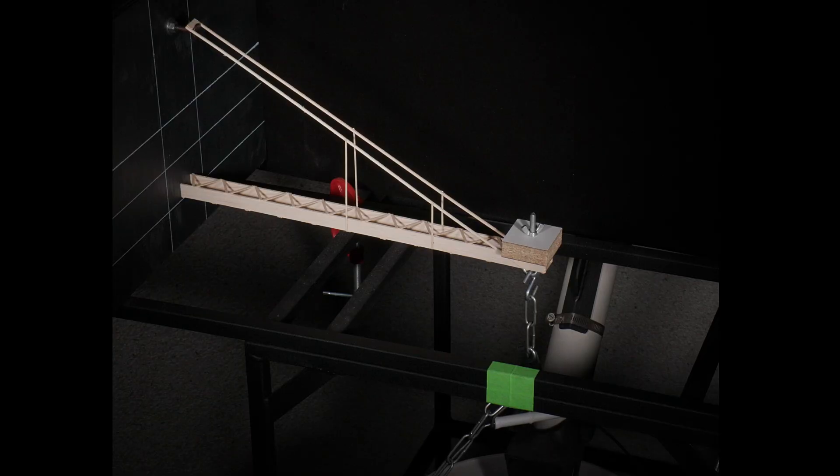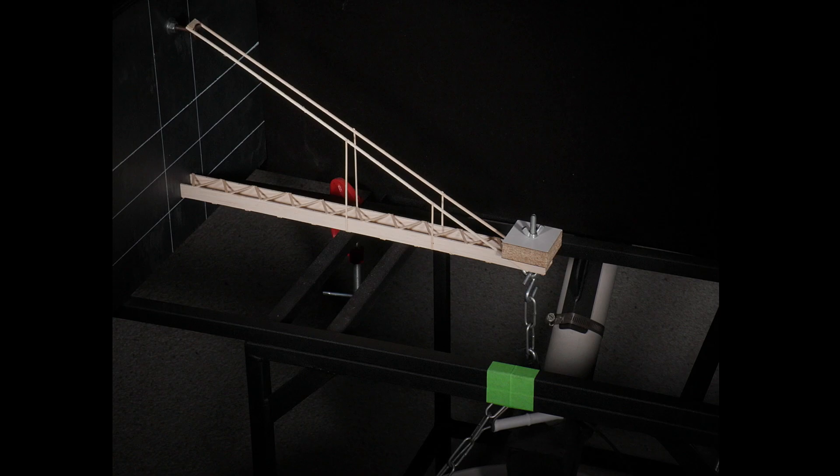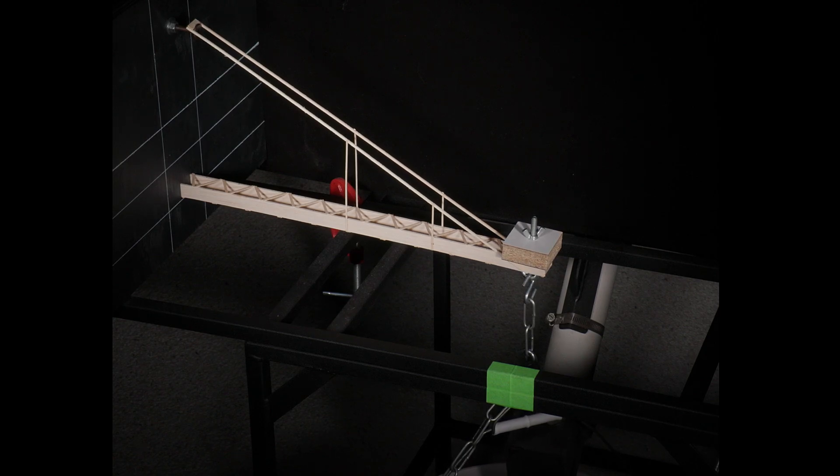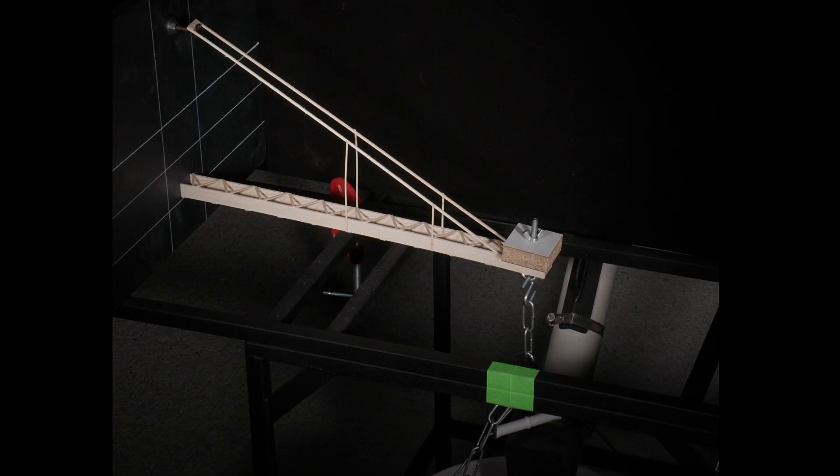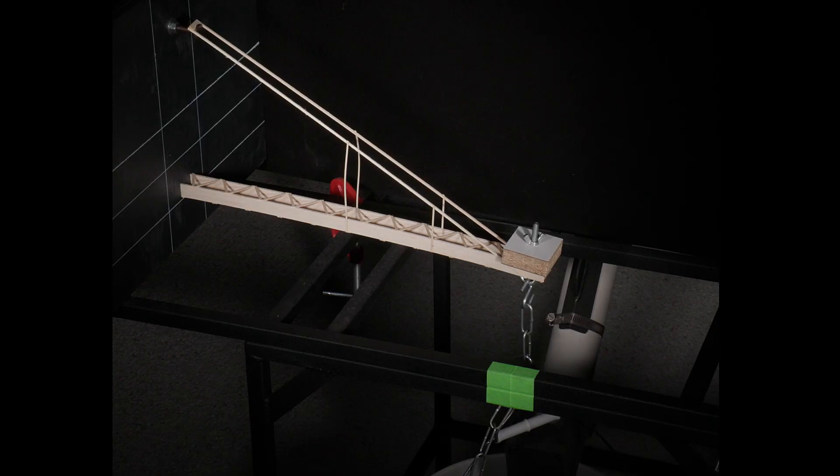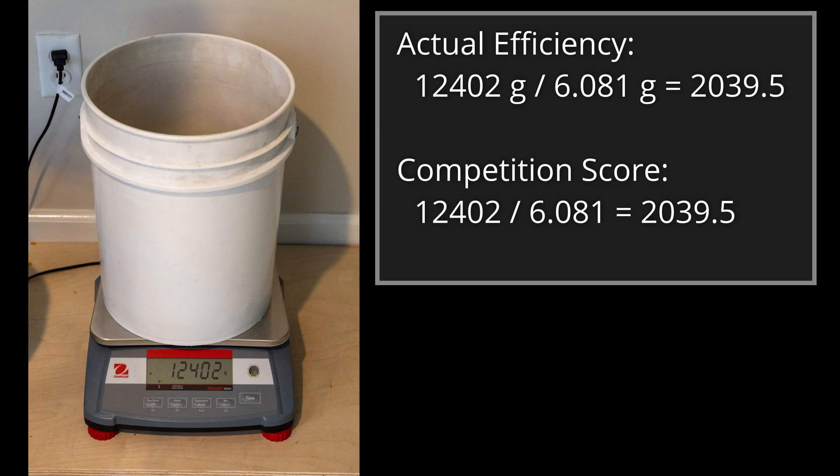This is the live testing of the boomy. As you can hear with the sand pouring, I like to load the device pretty fast to limit the time under maximum load. You can really start to see the compression member bending and the vertical members bowing outward as they help resist the compression bending. Even with this non-bonus 20 centimeter boomy, the internal compression and tension forces are very high. You can see that the boomy held a respectable 12.402 kilograms for an actual efficiency and competition score of 2039.5.